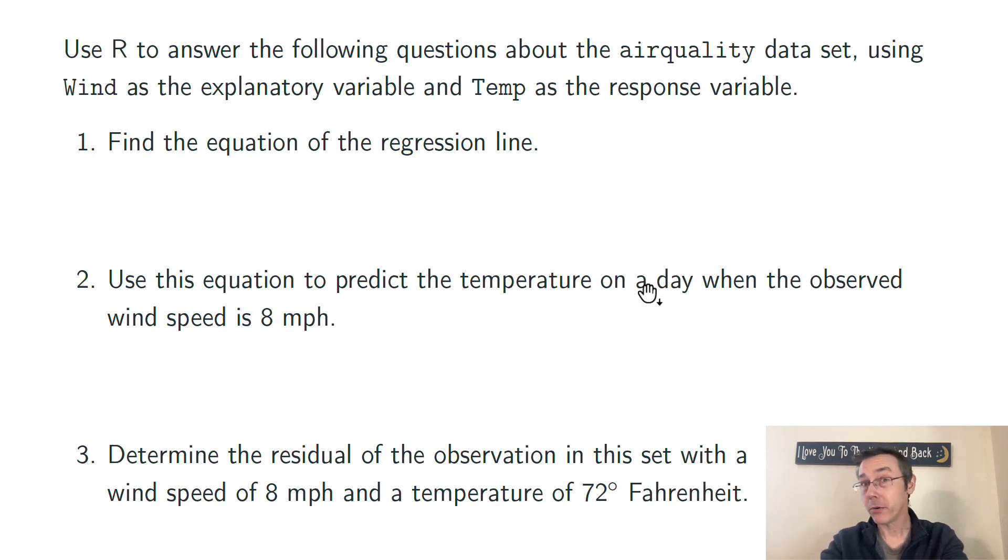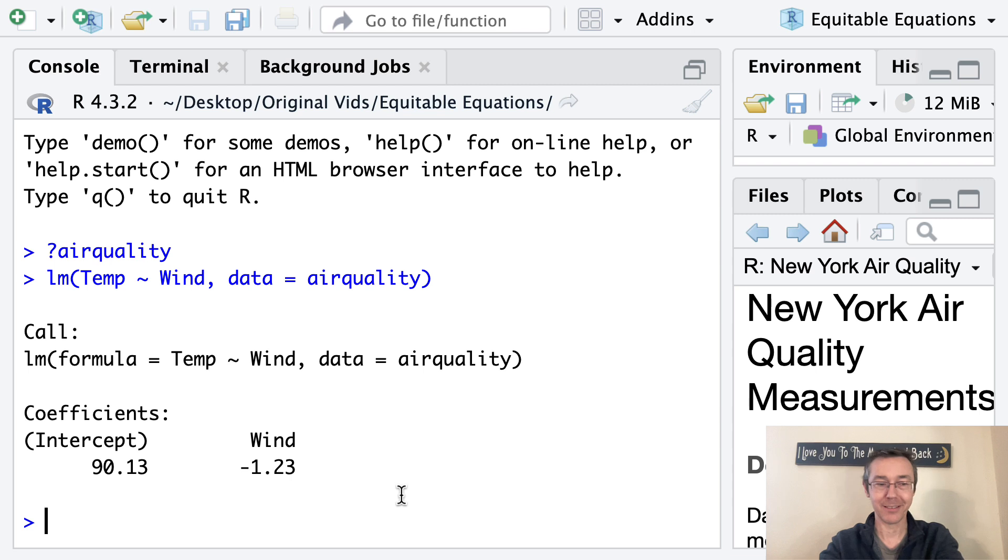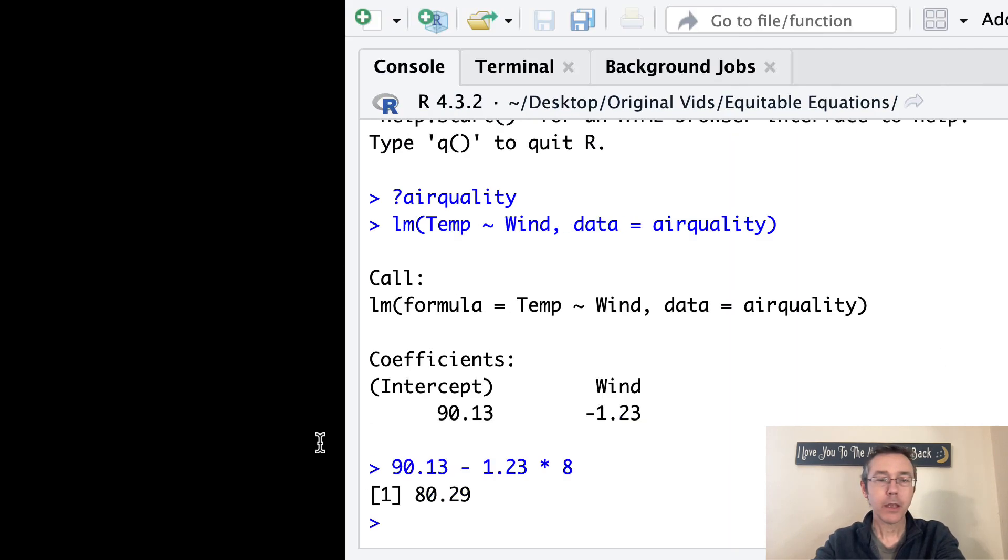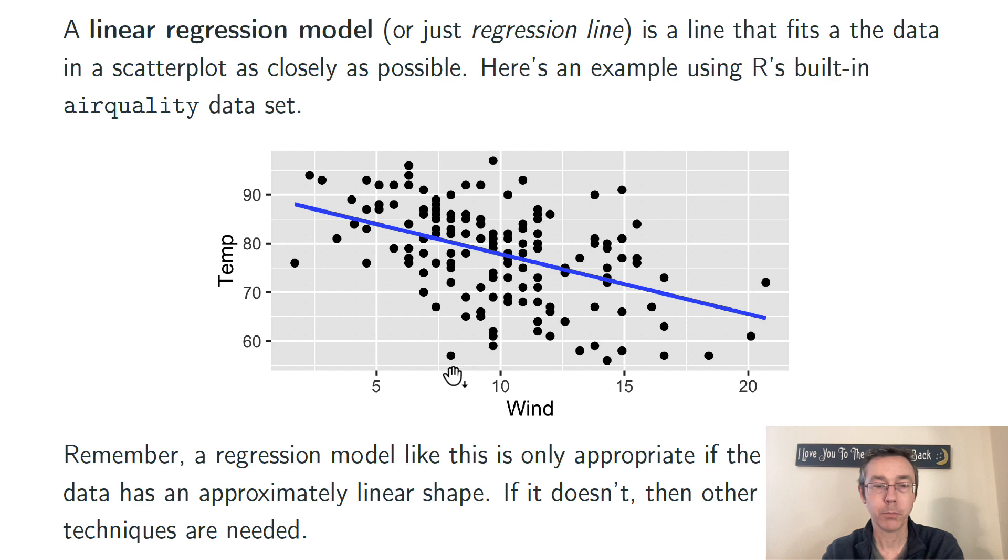Now let's use this equation to predict the temperature on a day when the observed wind speed is 8 miles an hour. Now, this just means plugging into the regression line. Miles per hour is our x variable, our explanatory variable. We can just plug that in for x to get a y value out, to get a predicted temp. So 90.13 minus 1.23 times x. And x in this case was 8. So we get a predicted value of 80.29 degrees Fahrenheit. If we look back at this scatter plot and find 8 miles per hour for wind on the x-axis, if we go up to the regression line, we're going to hit that at the y value that we just determined, a little bit more than 80. In other words, what this is doing is it is taking the x value and giving me back the y value on this line, on this plot.